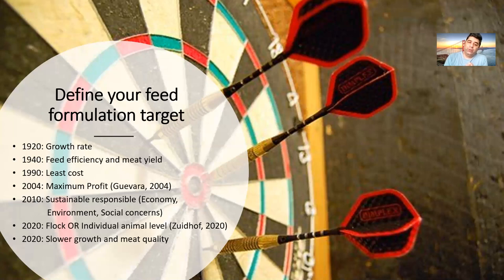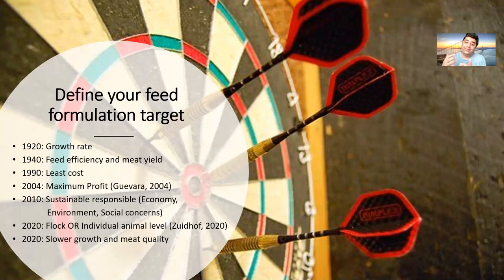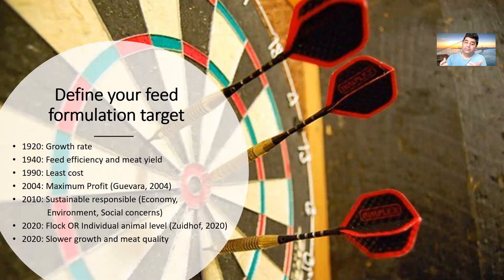Also in 2020, especially in Europe, the industry is paying attention to slower growth and meat quality. If we consider animal welfare, it's necessary to have slower growth, especially in broilers. With higher growth rates, we are putting so much pressure on animal physiology, and the result is obvious — we sometimes face metabolic disorders or ascites because of the higher growth rate in birds. So we need to consider all these factors before we formulate a diet.